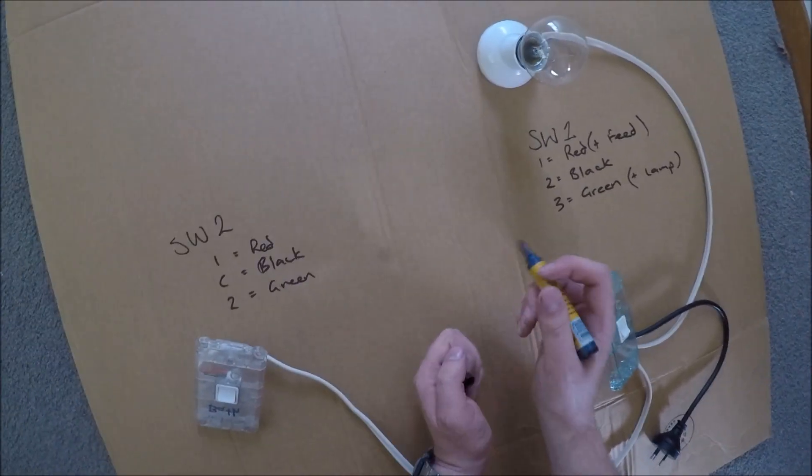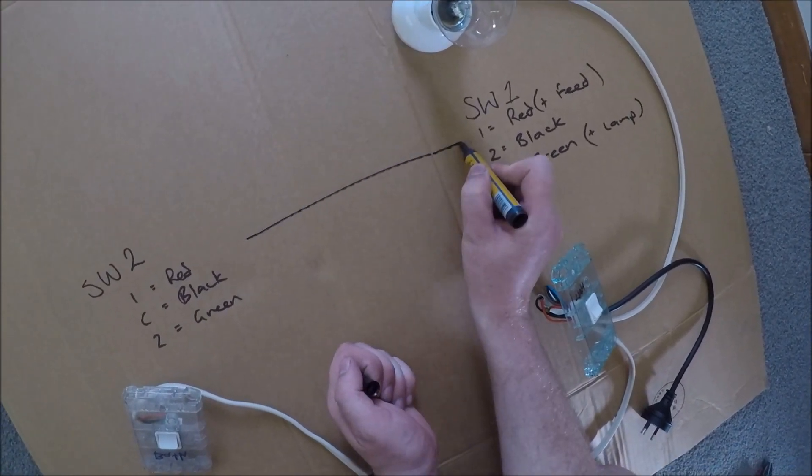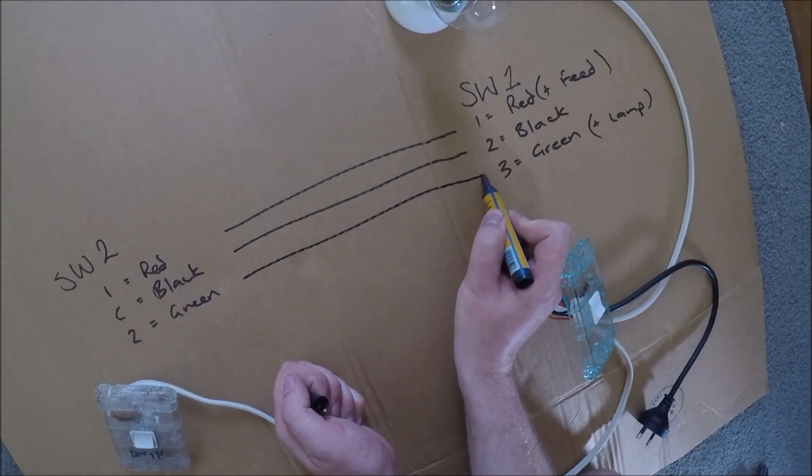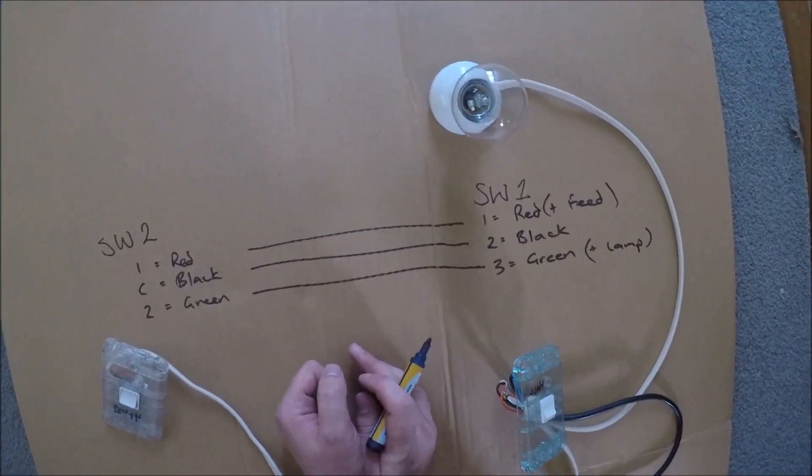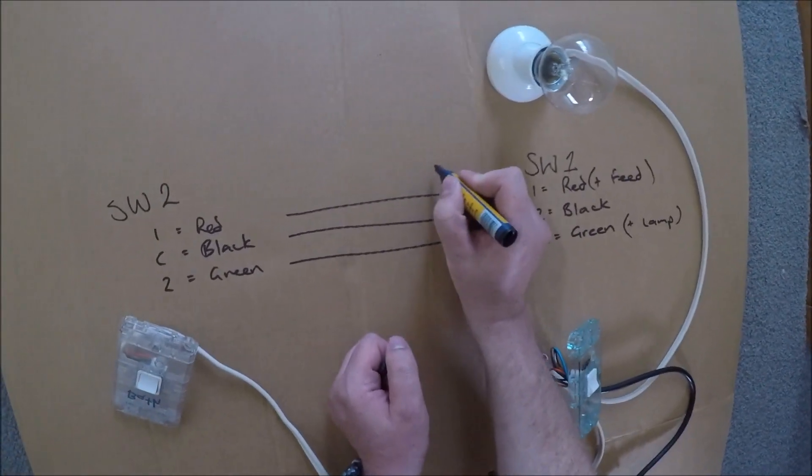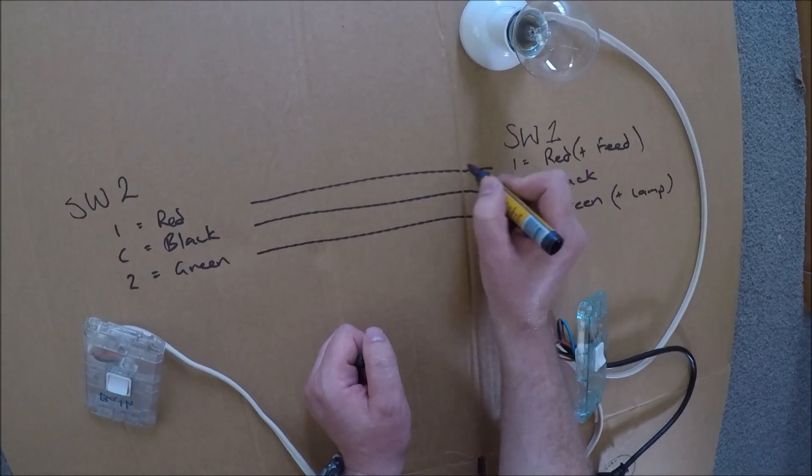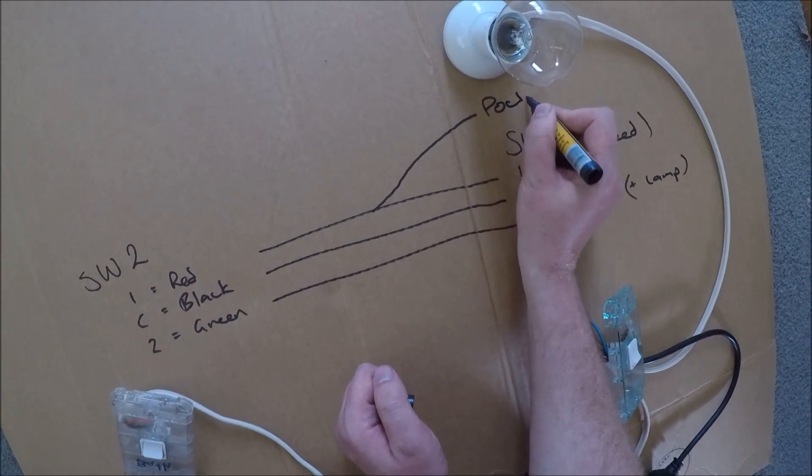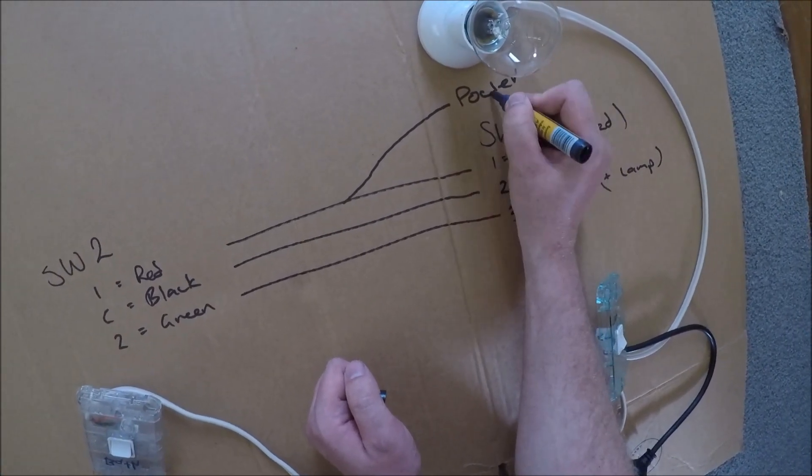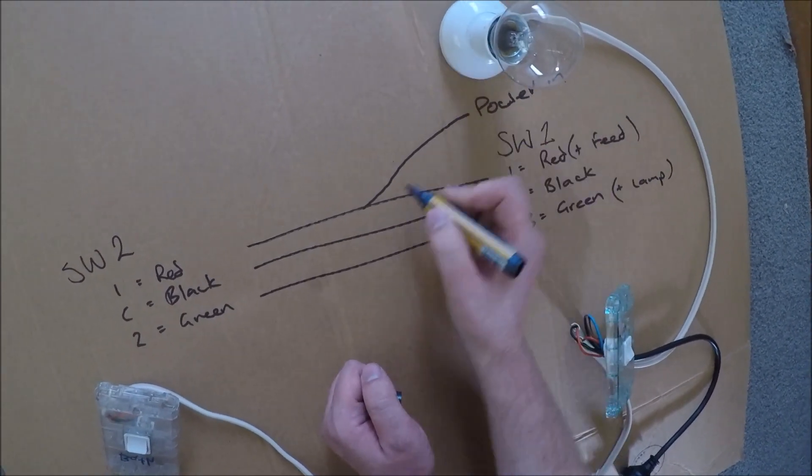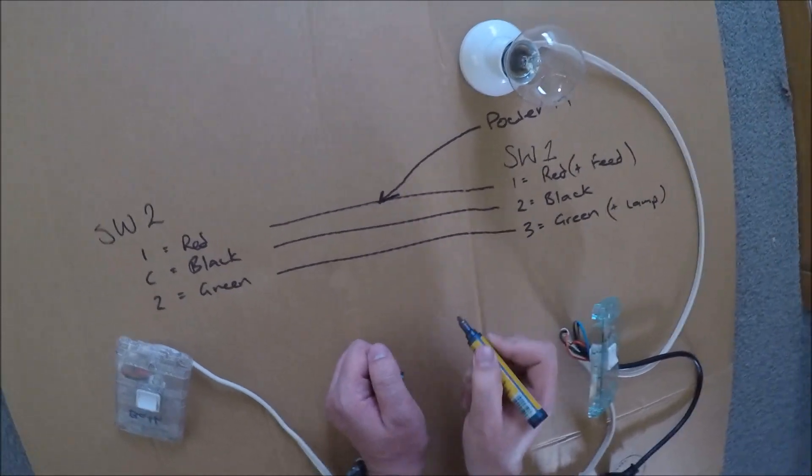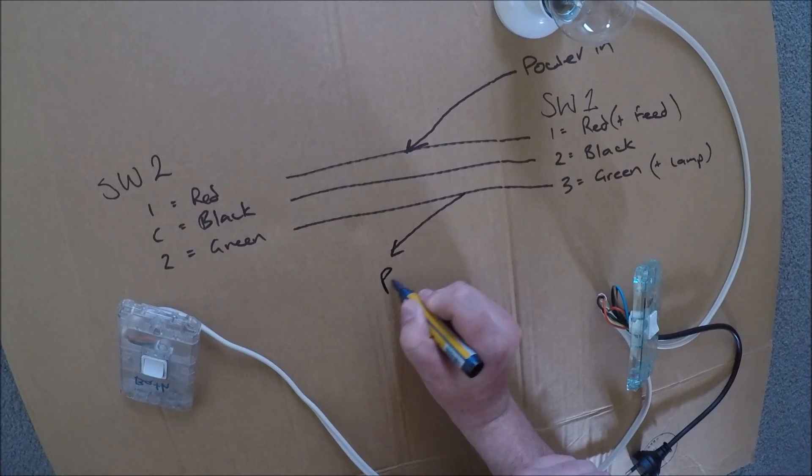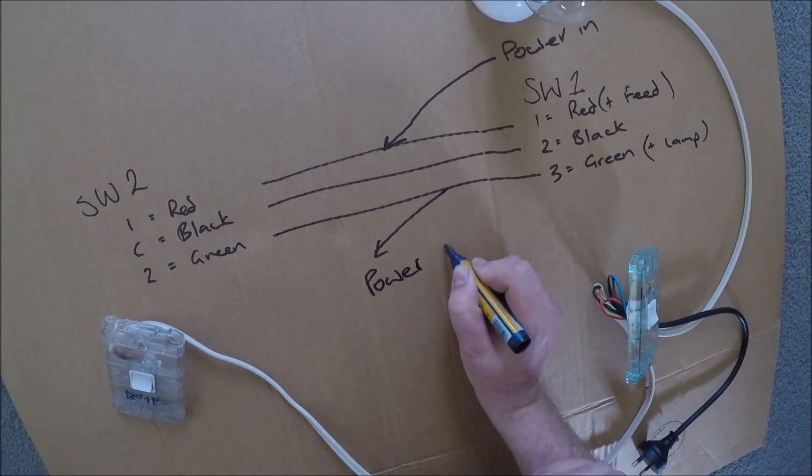Essentially what you're doing, if we draw it up, these are your cables between the two switches. Now you've got your feed coming in on this one. This has your power in. Your power comes in here and your power comes out.